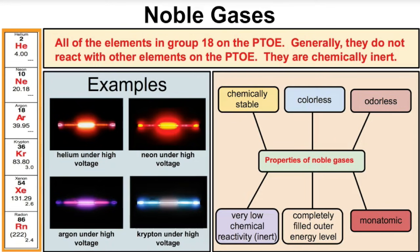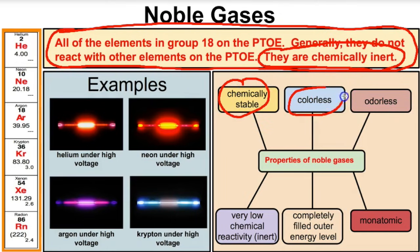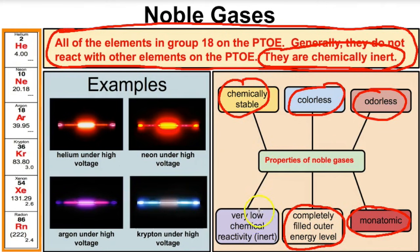Next up we have the noble gases — all the elements in group 18 on the periodic table. These guys are generally inert and chemically unreactive, though there are some instances where they will react. The noble gases are helium, neon, argon, krypton, xenon, and radon. They're chemically stable, colorless, odorless, and monatomic — meaning they can exist as single atoms not bonded to themselves or another atom. They have a completely filled outer energy level, which is why they're unreactive, and they have very low chemical reactivity.